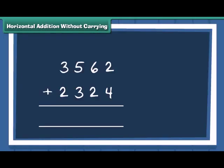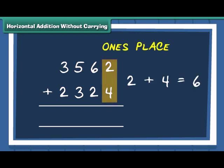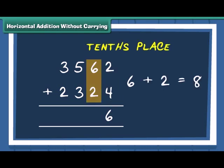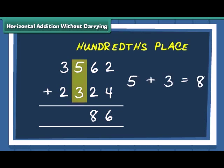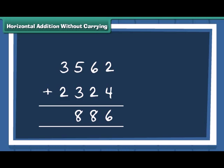We have the 2 numbers, 3562 and 2324 which are written as shown. Now we first add numbers at ones place. Next, we move to numbers at tens place, then add the numbers at hundreds place and finally the numbers at thousands place are added. Thus, sum of 3562 and 2324 is 5886.